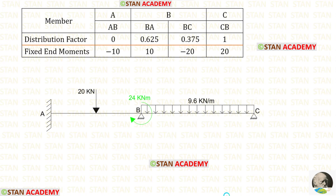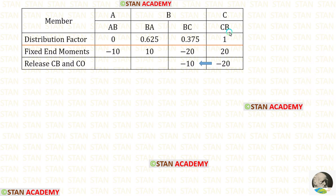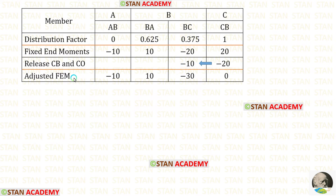Now let us start making the moment distribution table. First let us enter all of the members, then enter the distribution factor values, then enter the fixed end moments. At point C there will be no moment because it is a simply supported end, so we have to make CB equal to zero. The fixed end moment for CB is 20, so when we add minus 20 with this 20 we get 0. We have released CB and we give a carry over from CB to BC — dividing minus 20 by 2 gives minus 10. For AB and BA there are no changes, but for BC we add the two values to get minus 30.